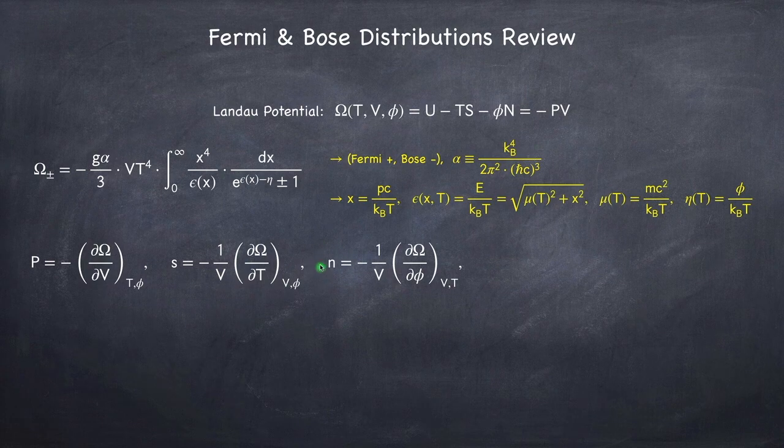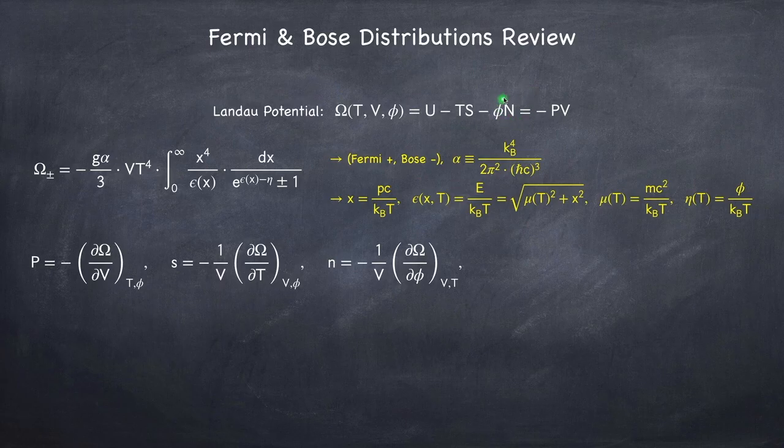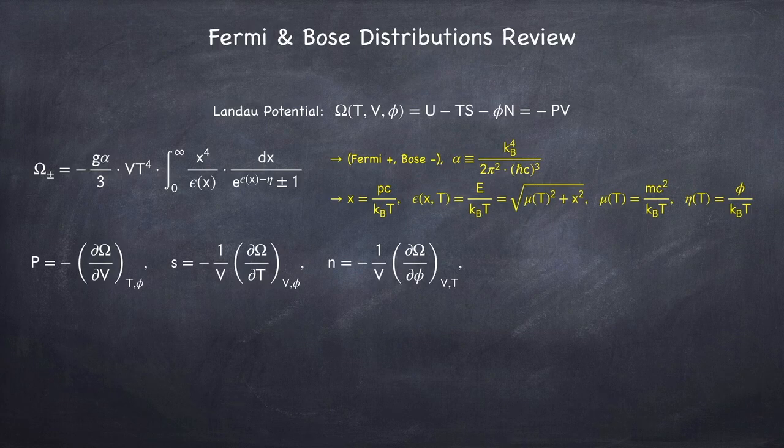little n is the number density. Capital N is the total number of particles, little n is the number of particles per volume. And that's the negative derivative of the potential with respect to the chemical potential, divided by the volume.